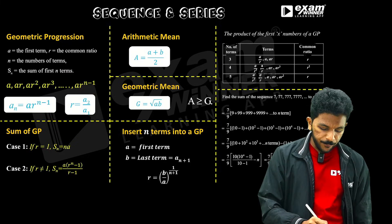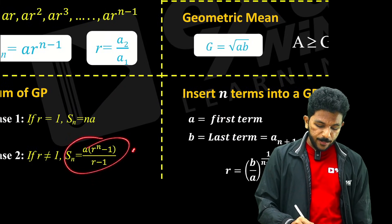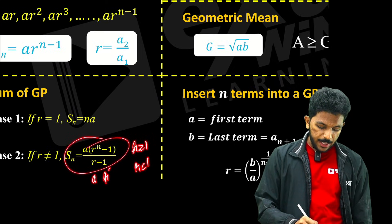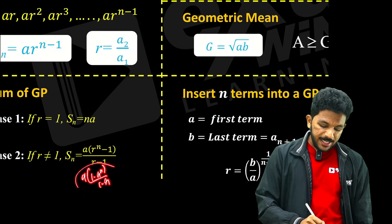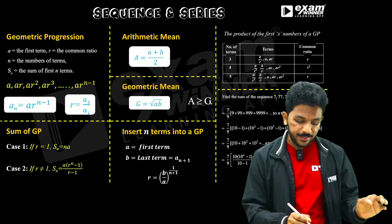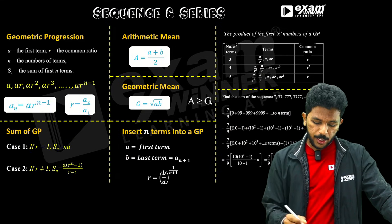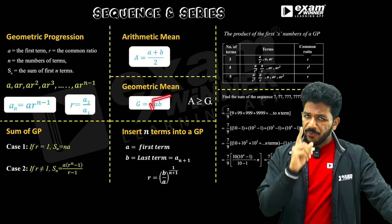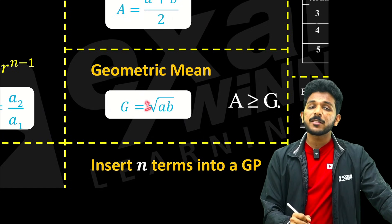This formula is for when the ratio equals 1 — if the ratio is 1, the sum of n terms is n times a. Arithmetic mean is the average: A plus B divided by 2 — it's the midpoint. Geometric mean is very important: it is the square root of the product of the two numbers.